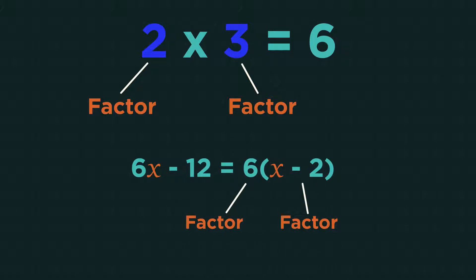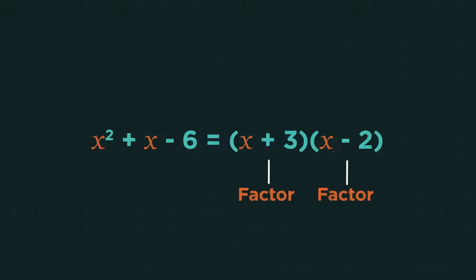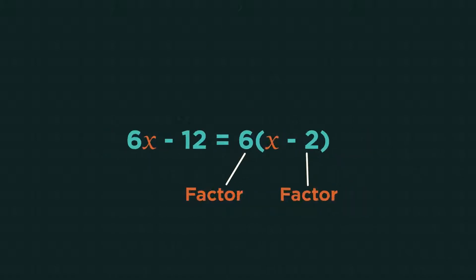Factorizing is the process of finding the factors. It's a form of simplifying and basically just means to put into brackets. Then if we multiplied our factors together we'd get back to 6x minus 12.